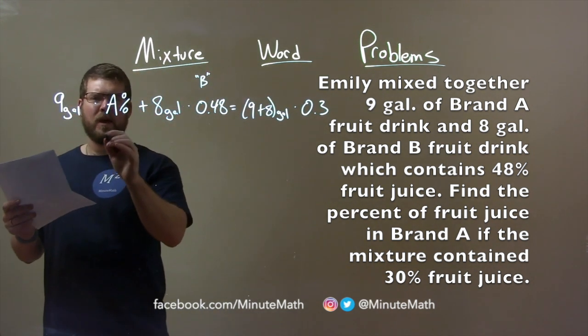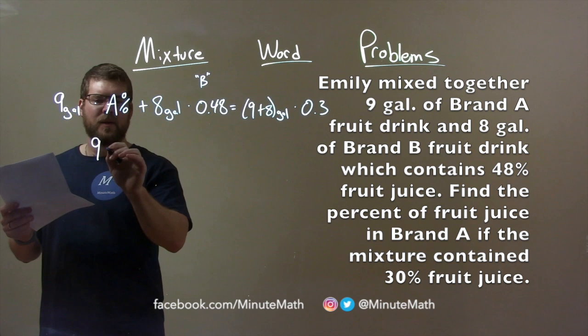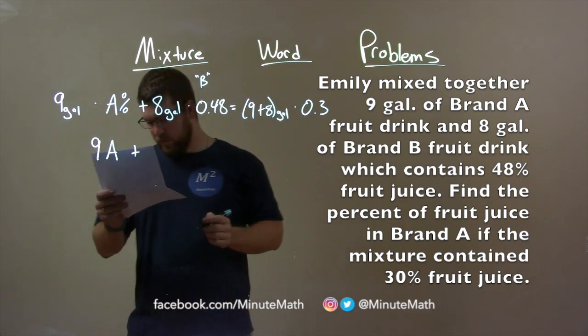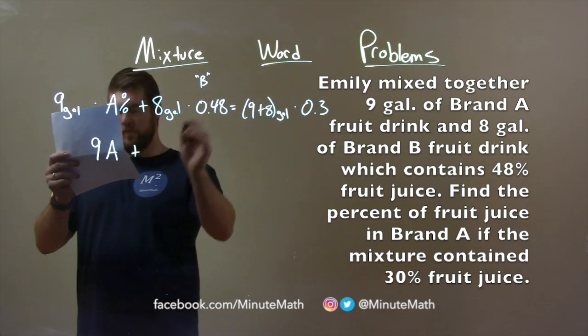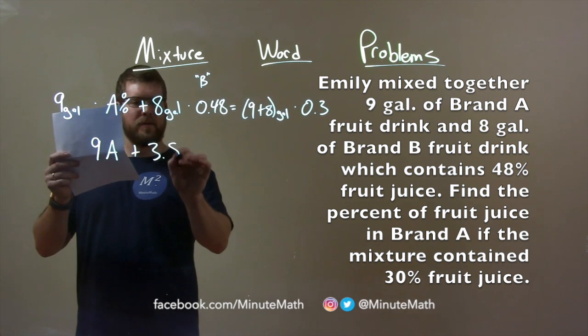So, we write this out. We have, well, 9 times A plus 8 times 0.48, is 3.84.